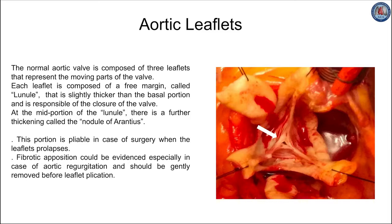At the mid-portion of the lunule, there is a further thickening called the nodule of Arantius. Recognition of these anatomical features — lunule and nodule of Arantius — is important to understand the physiopathology of valve regurgitation and the possibility of surgical repair. Aortic regurgitation is mainly caused by the lack of apposition of these structures, which can be caused either by tissue retraction or by enlargement of the skeleton of the root, mainly at the level of the annulus and/or sinotubular junction. The basal margin of the leaflets is attached in a semilunar fashion to the aortic root.